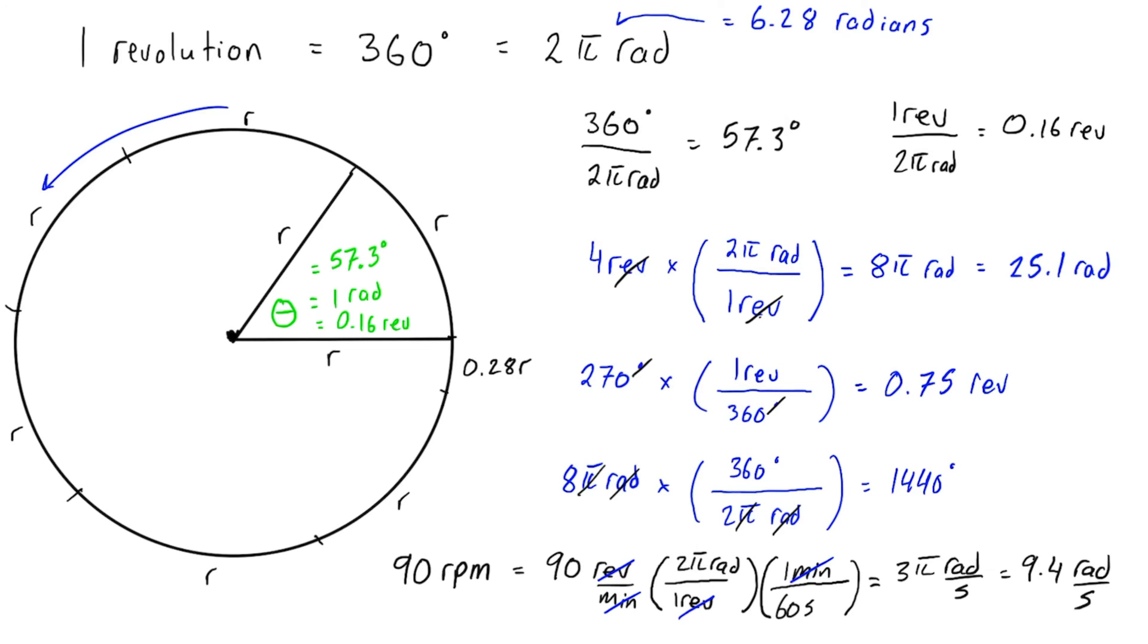Radians per second, like I was saying before, is a really important unit for us because that's the units of angular speed, which is going to be showing up in almost every circular motion problem going forward.